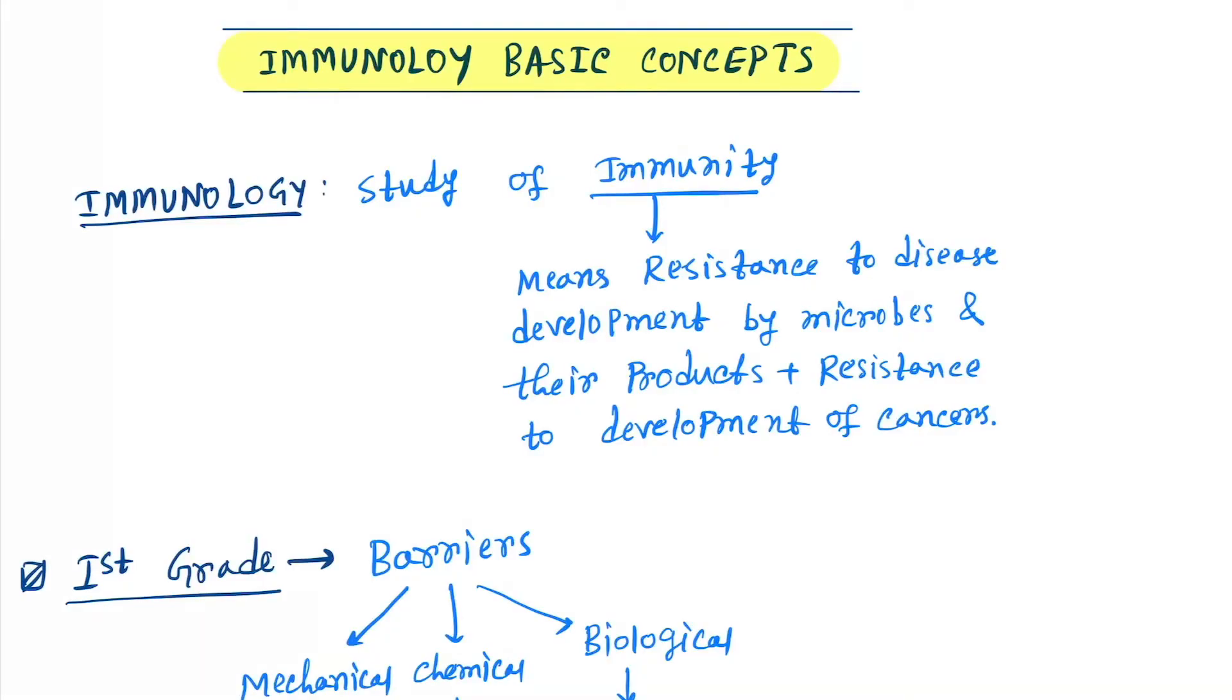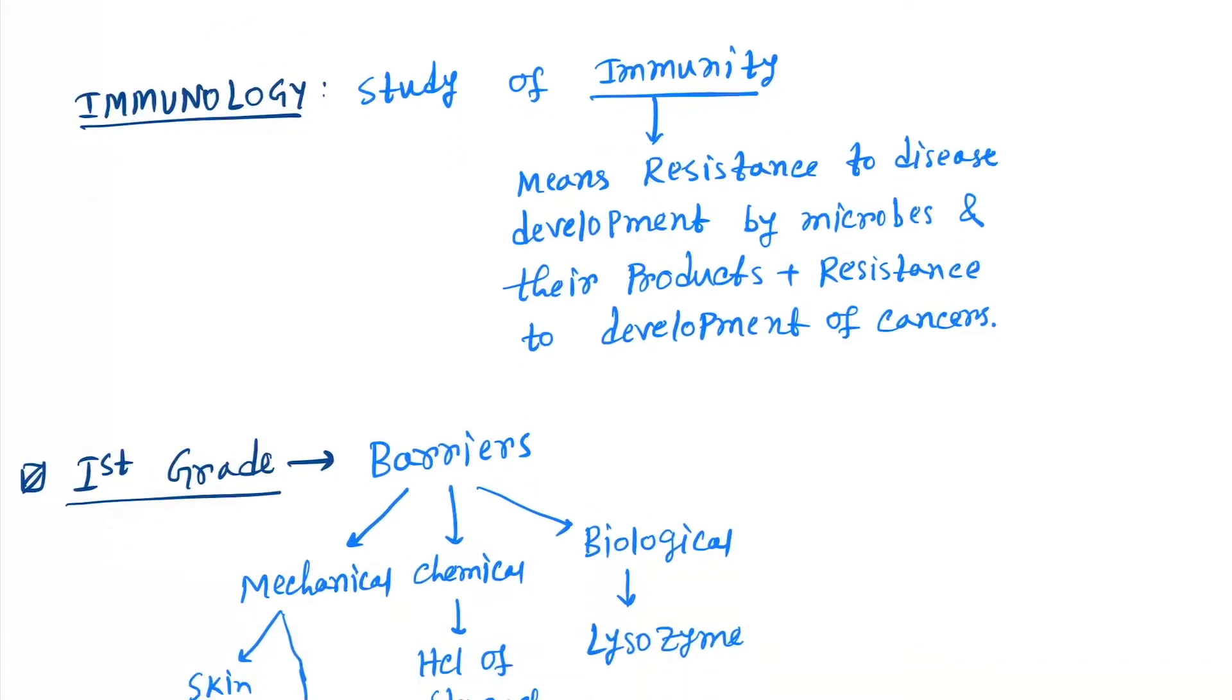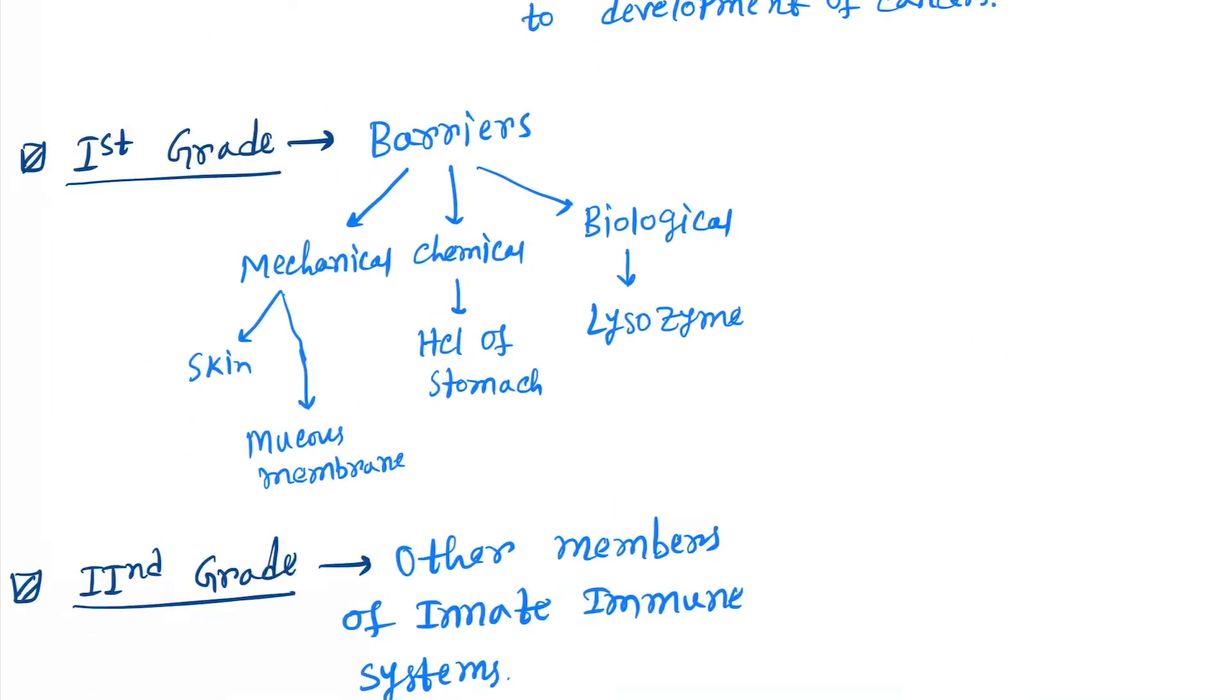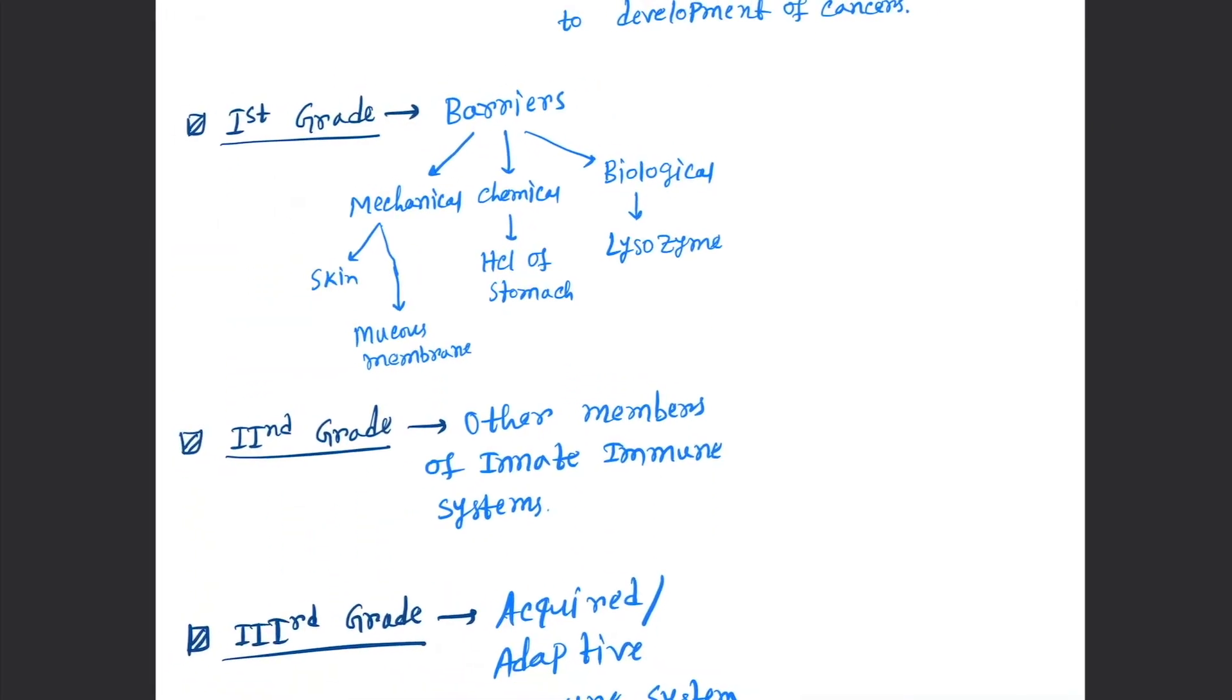Hello friends, today our topic is the basics of immunology, the basic concepts of immunology. So what is immunology? Immunology is the study of immunity. What is immunity? Immunity means resistance to disease development by microbes and their products, plus resistance to development of cancers. Both are called immunity.